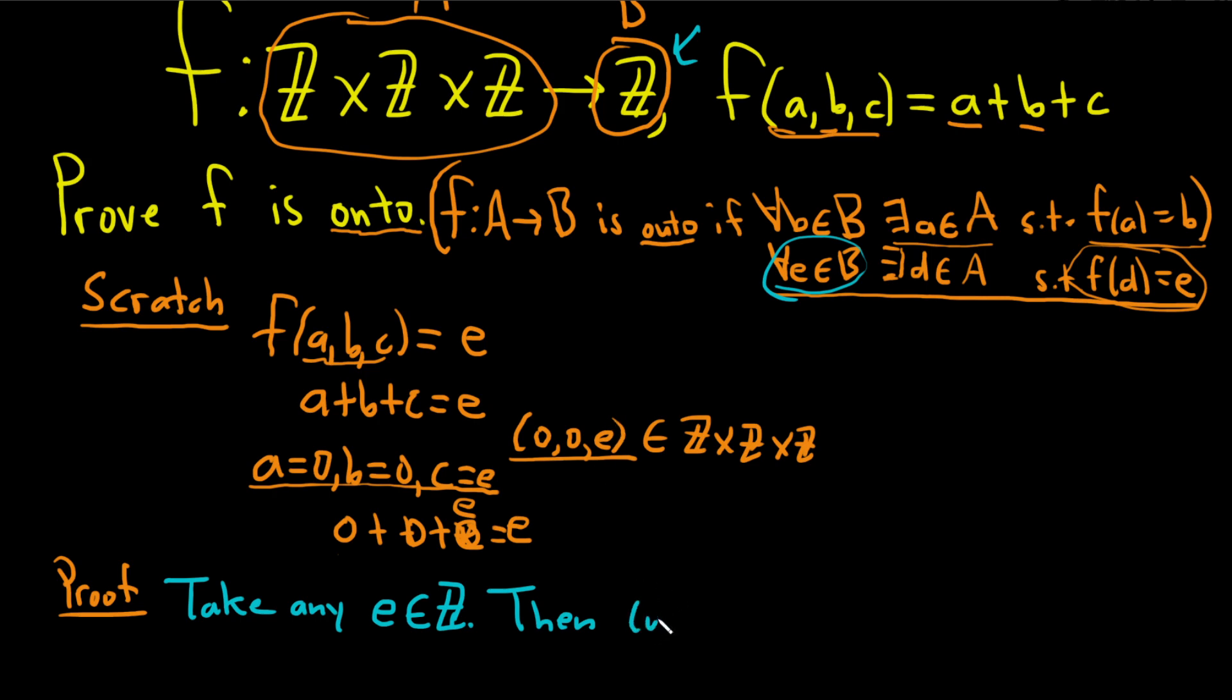Then we need to show the existence of an element in this product, Z cross Z cross Z. The element 0, 0, E is certainly in this Cartesian product, Z cross Z cross Z, right? Certainly, because each of the components are integers, in particular, E is an integer, and so is 0.